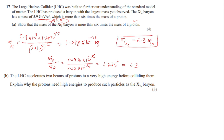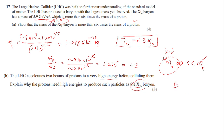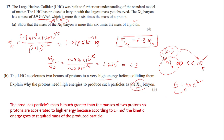Explain why protons need high energies to produce particles like Xi-b. To create a massive particle, energy must be available to provide extra mass. The combined mass of two colliding protons is much less than the mass of Xi-b. According to E = mc², kinetic energy given to the protons can convert into mass, providing the extra mass needed to produce the Xi-b baryon.